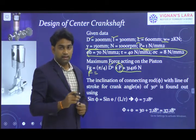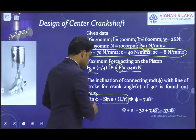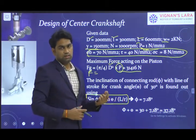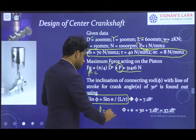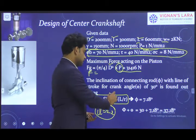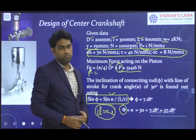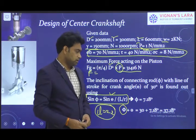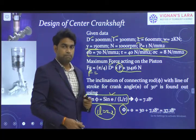The maximum load acts at crank angle theta = 30 degrees. We use the relation sin φ = sin θ / (L/R), where L/R is the ratio of connecting rod length to crank radius. The crank radius R is determined from the stroke length: stroke length L = 2R. Substituting all values with theta = 30 degrees, we calculate φ = 7.18 degrees. The included angle theta plus phi = 30 + 7.18 = 37.18 degrees. Using this included angle, we calculate the radial load as F·cos(θ + φ) and the tangential load as F·sin(θ + φ).